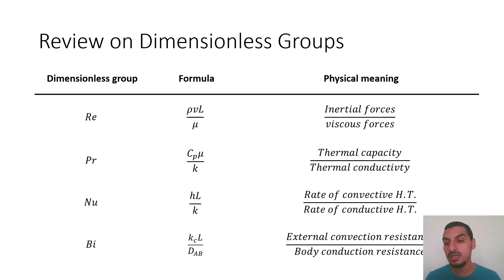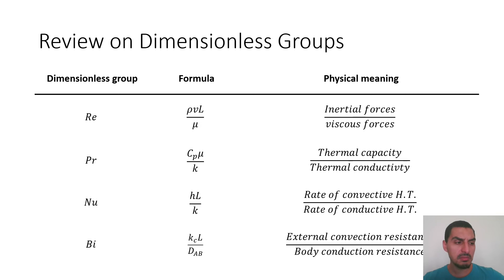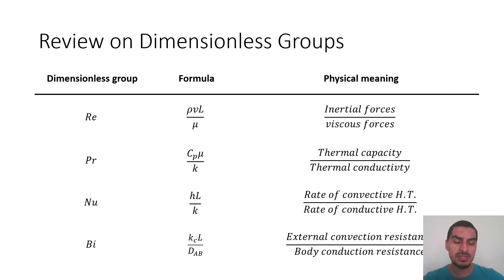Dimensionless groups are a very important part of convection in both heat transfer and mass transfer. They are useful because they have no dimension, so the output is the same regardless of whether you use British, American, or SI units. But the most important thing about dimensionless numbers is their physical meaning — a parameter can tell you a lot just by knowing its value.